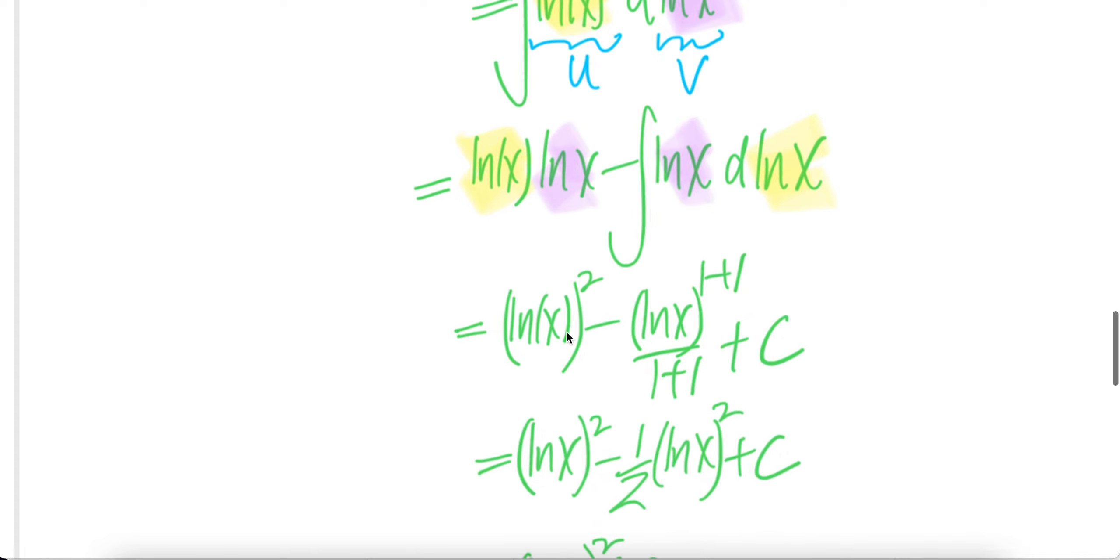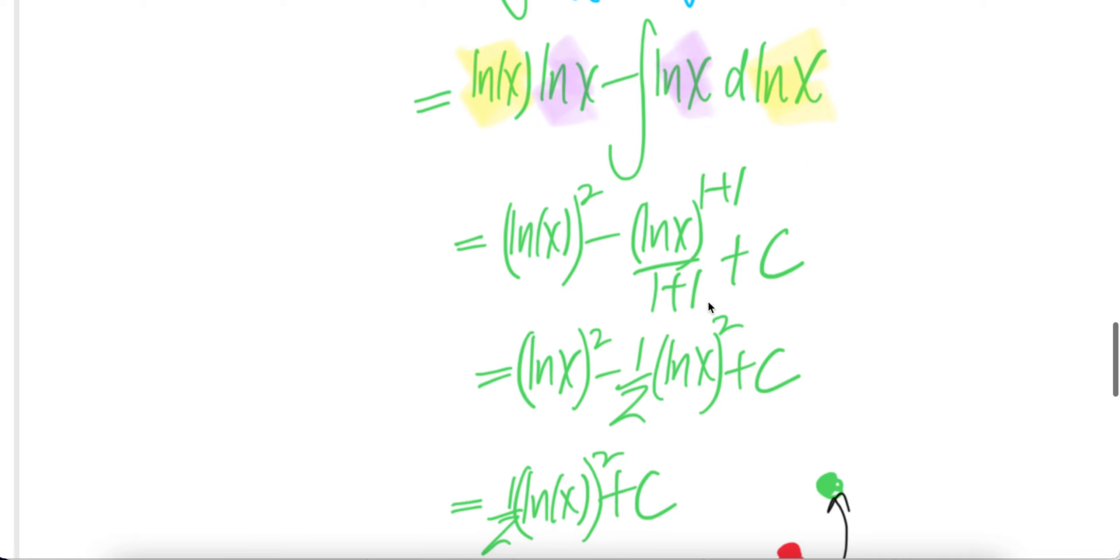Now this one gets you ln x squared and then this one gets you ln x, 1 plus 1, or 1 plus 1 plus c. 1 plus 1 is 2 upstairs, 2 downstairs. You get half ln x squared.